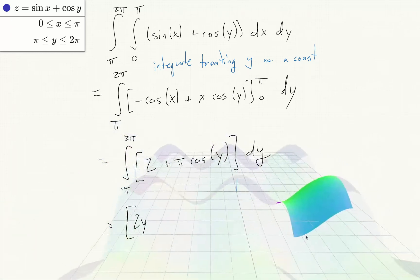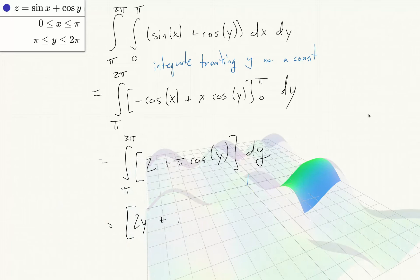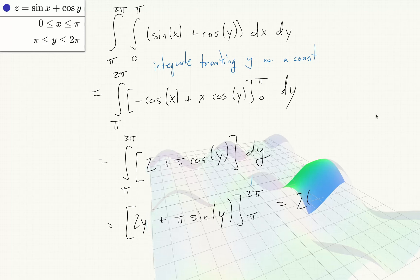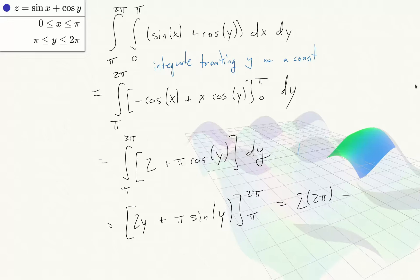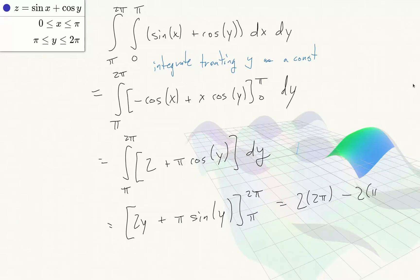And that is 2y plus π sine y at 2π and at π. Since sine of π and 2π is 0, this will be 2 times 2π minus 2 times π, which equals 2π.